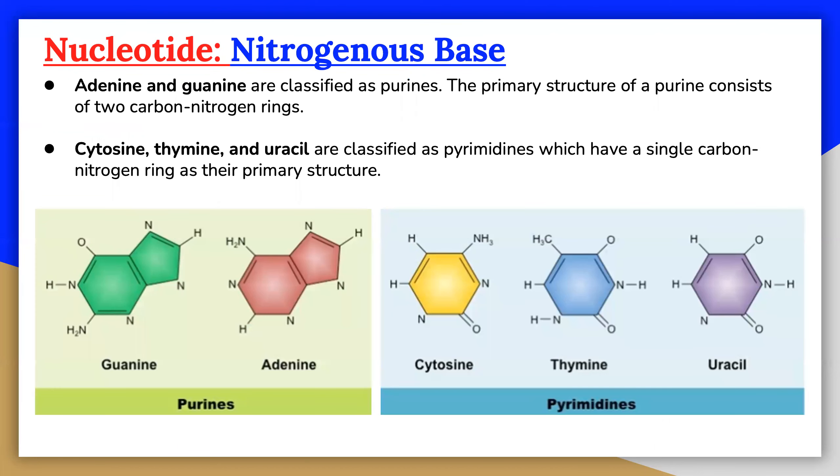The nitrogenous bases are organic molecules and are so named because they contain carbon and nitrogen. They are bases because they contain an amino group that has the potential of binding extra hydrogen, making it more basic. Adenine and guanine are classified as purines. The primary structure of a purine consists of two carbon nitrogen rings.